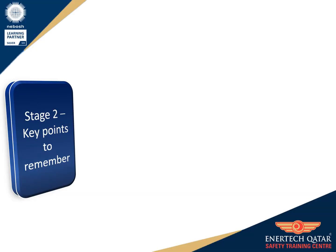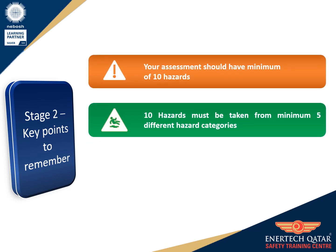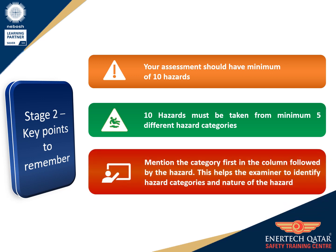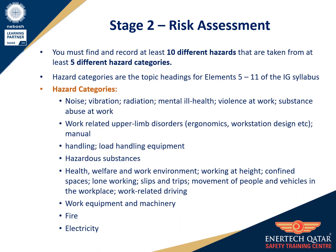Key points to remember: your assessment should have a minimum of 10 hazards. These 10 hazards must be taken from a minimum of 5 different hazard categories. Mention the category first in the column, followed by the hazard — this helps the examiner identify hazard categories and the nature of the hazard. You must find and record at least 10 different hazards from at least 5 different hazard categories. For reference, hazard categories are the topic headings for elements 5 to 11 of the IG syllabus.